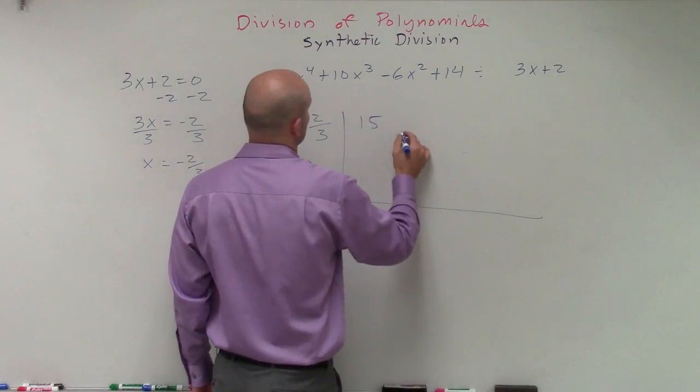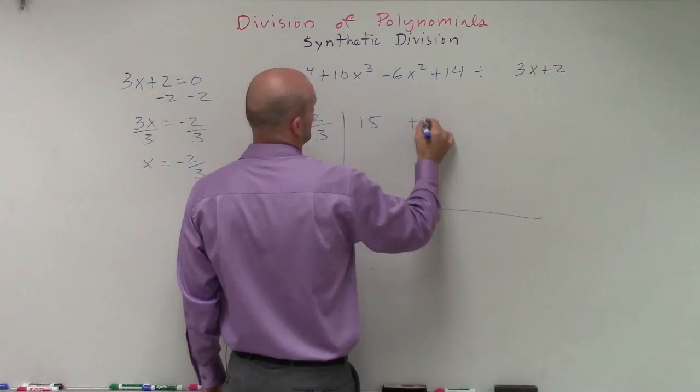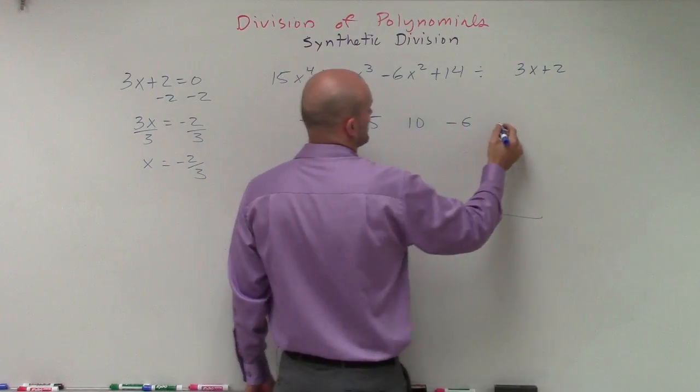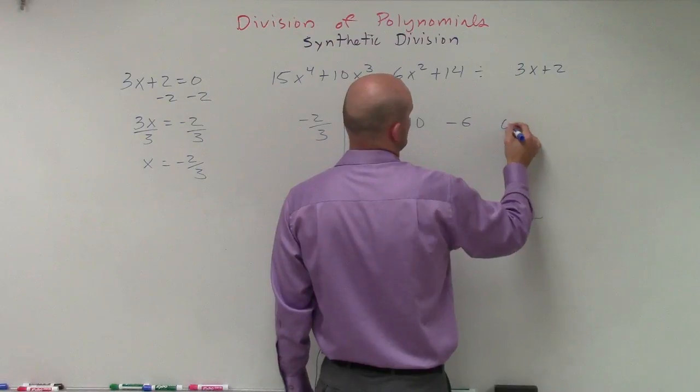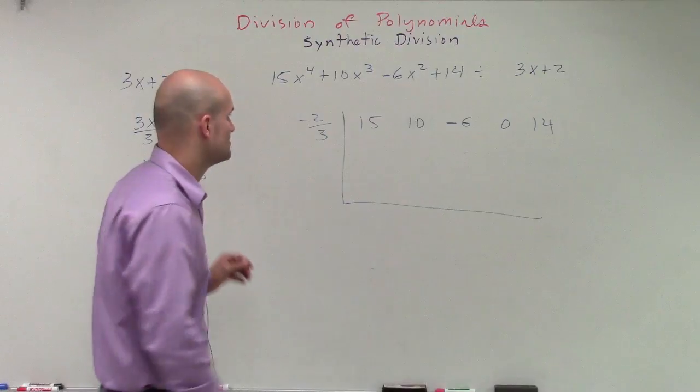So I have 15, positive 10, negative 6, and 0, and then a positive 14. You've got to make sure we include that 0, or we're going to have some problems.